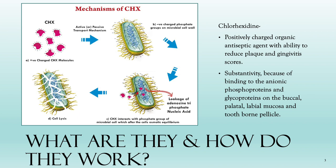Now, how does it act? Chlorhexidine has a typical feature that gives it an advantage over its peers, and that is substantivity — meaning it remains in your mouth for a certain amount of time even after you've swished it, gargled it, and thrown it out. It binds to the anionic, meaning negatively charged, phosphoproteins and glycoproteins. Since chlorhexidine is positively charged, it attaches to these negatively charged phosphoproteins and glycoproteins present inside your mouth — what we call the oral mucosa, the inner skin of the mouth.